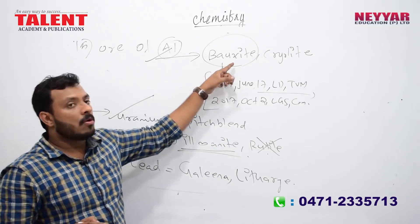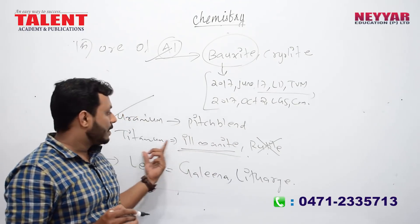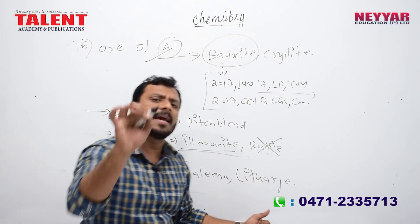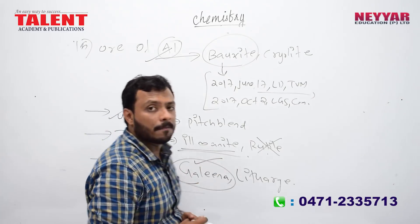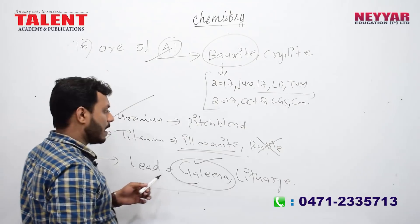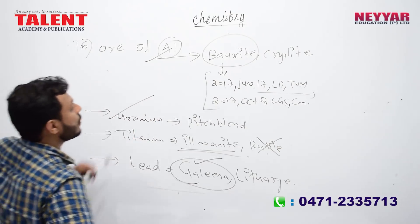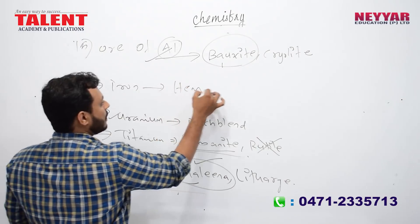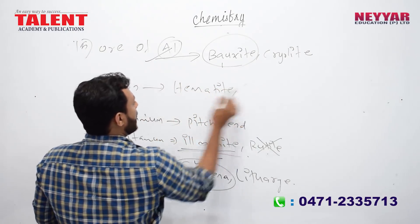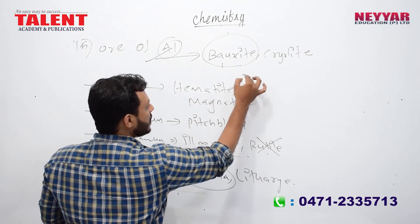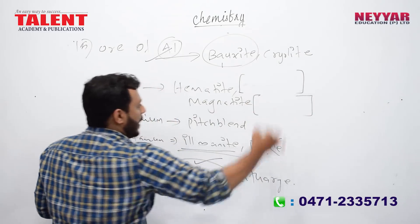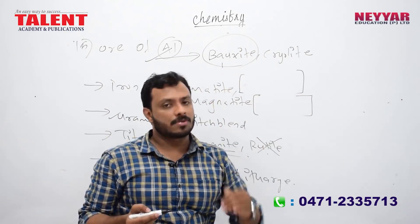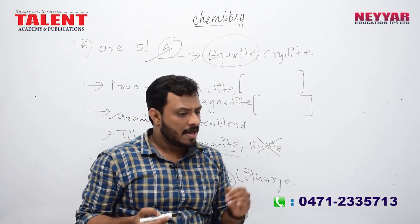Aluminum ore is bauxite. Titanium, uranium — the ores of iron are hematite (Fe₂O₃) and magnetite (Fe₃O₄). Hematite and magnetite are the ores of iron. This was a 2014 exam question on the name of the ore.